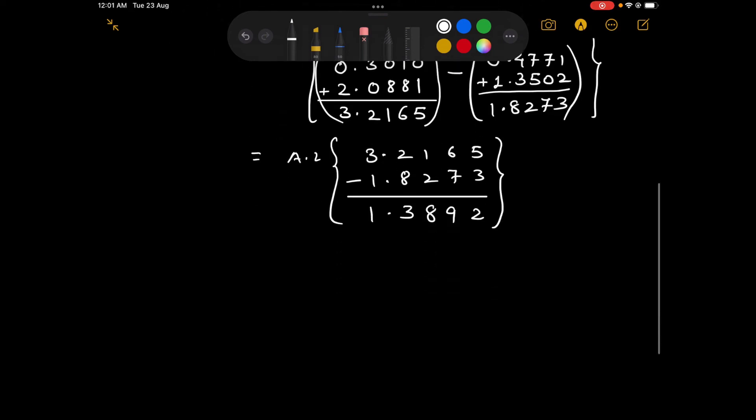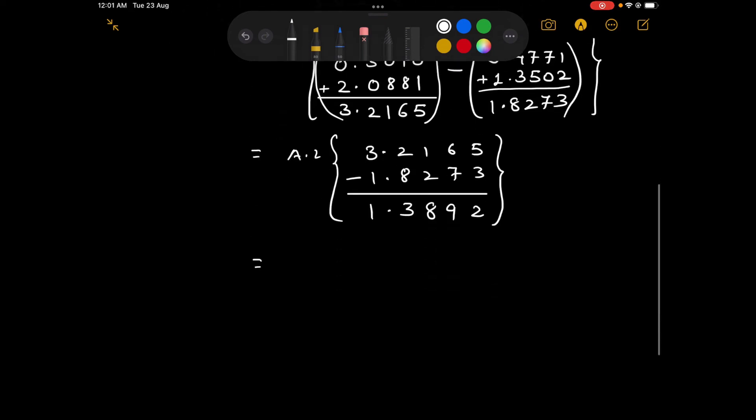The antilog for this is 2.450. Directly put a decimal after 1 digit into 10 raise to 1. That comes out to be 24.5 grams of potassium chlorate. Thank you.